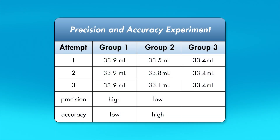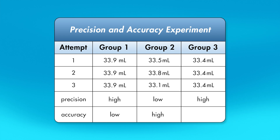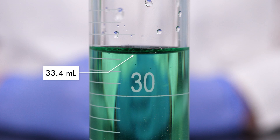Finally, the students in group three had measurements that were the same each time and correct, demonstrating both high precision and high accuracy. If the students in groups one and two had been equally careless while performing an experiment, their experiment might not have turned out correctly.